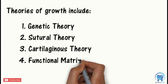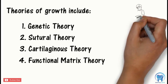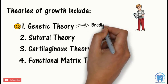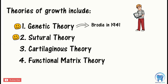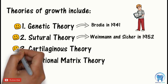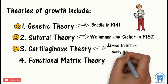Now let's remember the names of scientists and the year in which these theories were proposed. The genetic theory was proposed by Brody in the year 1941. The suture theory was proposed by Windman and Seager in the year 1952. The cartilaginous theory was proposed by James Scott in early 1950. And the functional matrix theory was proposed by Melvin Moss in 1962.